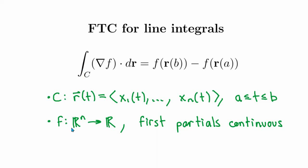The scalar field is a function from R^n to R. You do need to assume that the first partial derivatives of the scalar field exist and are continuous. The piecewise smooth curve C is given by the parametrization r(t) = (x₁(t), ..., xₙ(t)), with t going from a to b. You should notice a strong similarity between this and the statement of the usual fundamental theorem of calculus.